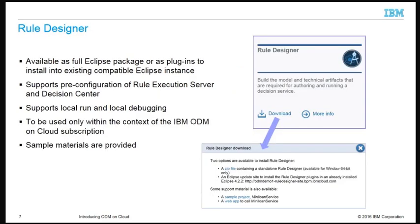You download Rule Designer from the cloud portal. If you have an existing Eclipse environment, you can install the Rule Designer plugins. Rule Designer for cloud supports the pre-configuration of Rule Execution Server and Decision Center cloud connections. Rule developers use Rule Designer to build the decision service model and technical artifacts. Local run configuration and debugging is also supported. Once you complete the development of a decision service, you can publish the projects to the Decision Center development environment in the cloud. You can use the downloaded Rule Designer only within the context of an ODM on cloud subscription. The download dialog also provides some supporting samples to help you get started.